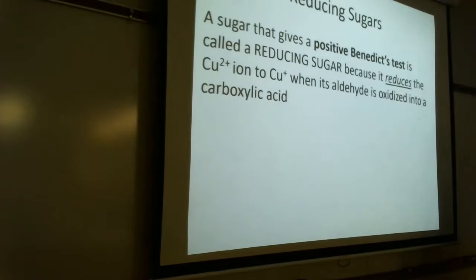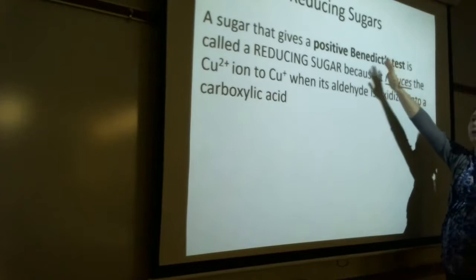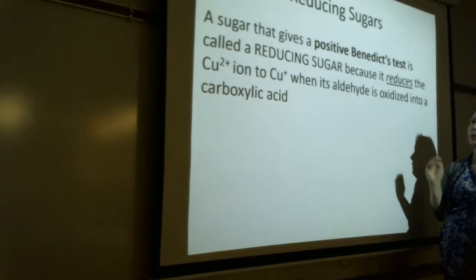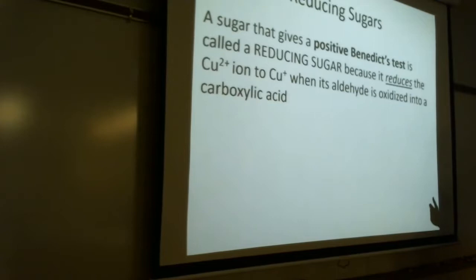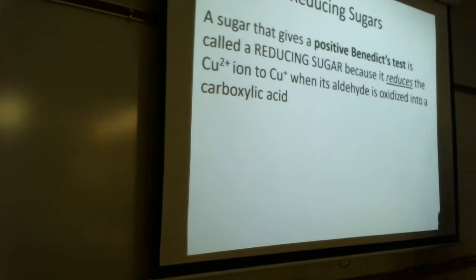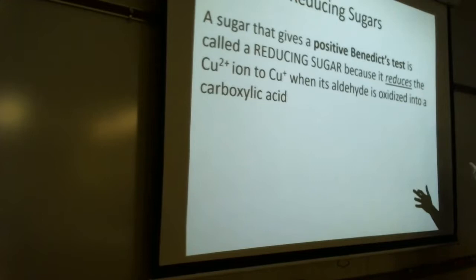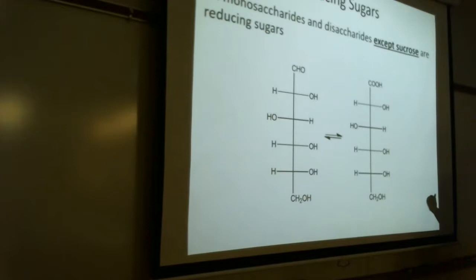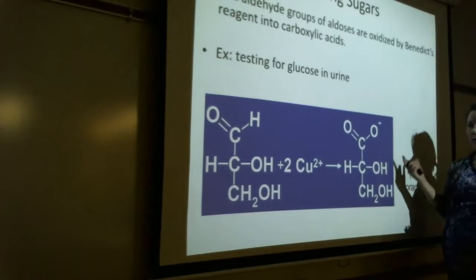Now a sugar that gives a positive Benedict's test is called a reducing sugar. When you hear the word reducing sugar, what we're referring to is any sugar that gives us a positive Benedict's test. And why is it called reducing sugar? It's because it reduces copper 2, hence the name reducing sugar. Any sugar that gives us a positive Benedict's test is called a reducing sugar because it reduces copper 2 to copper 1.